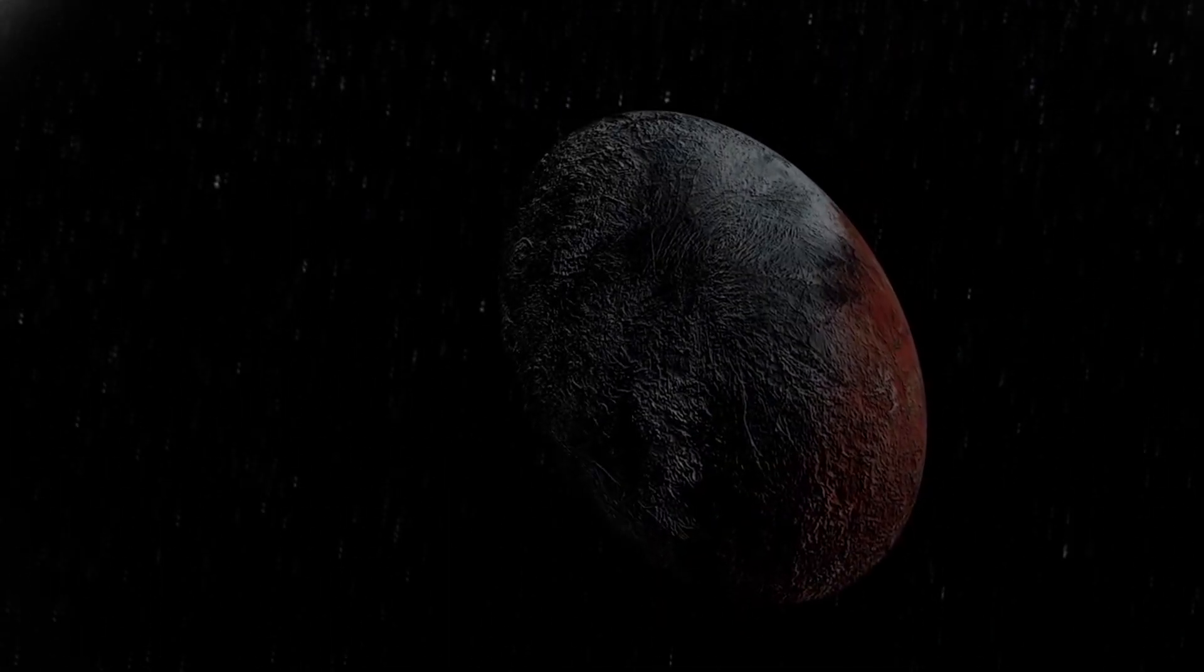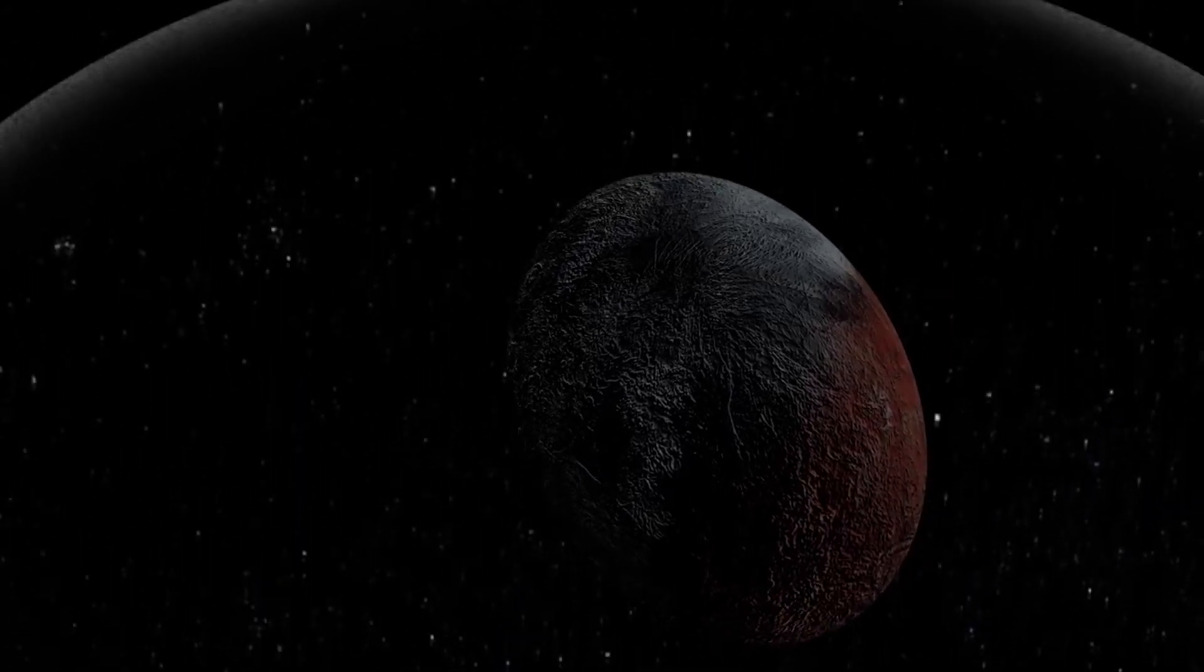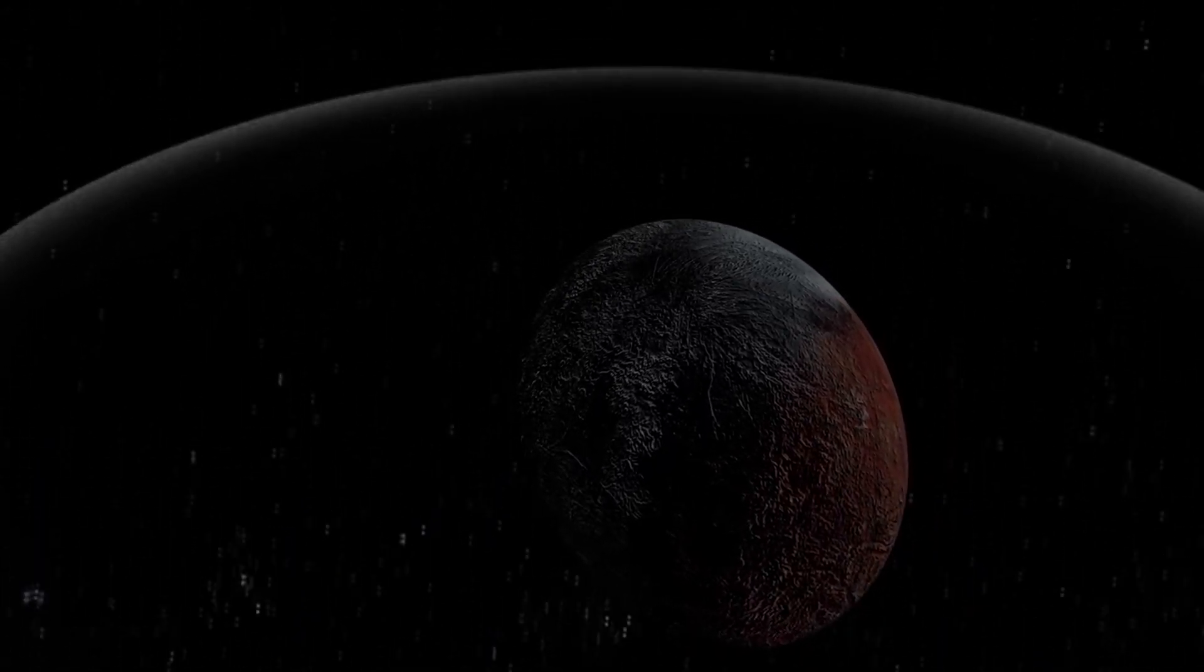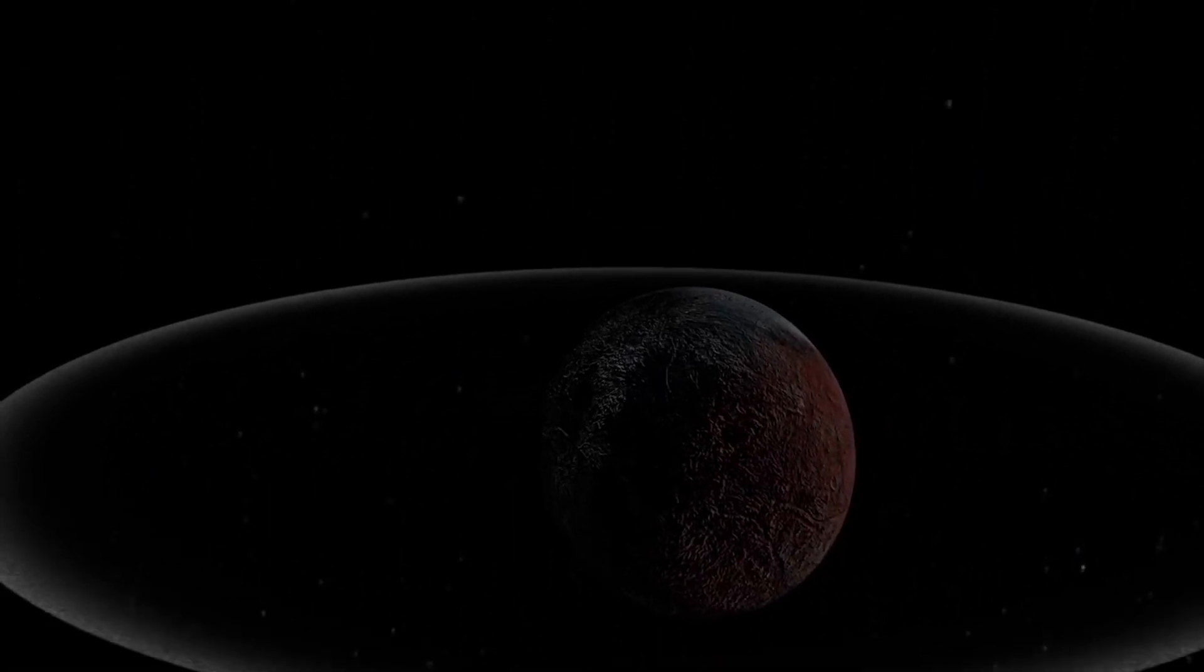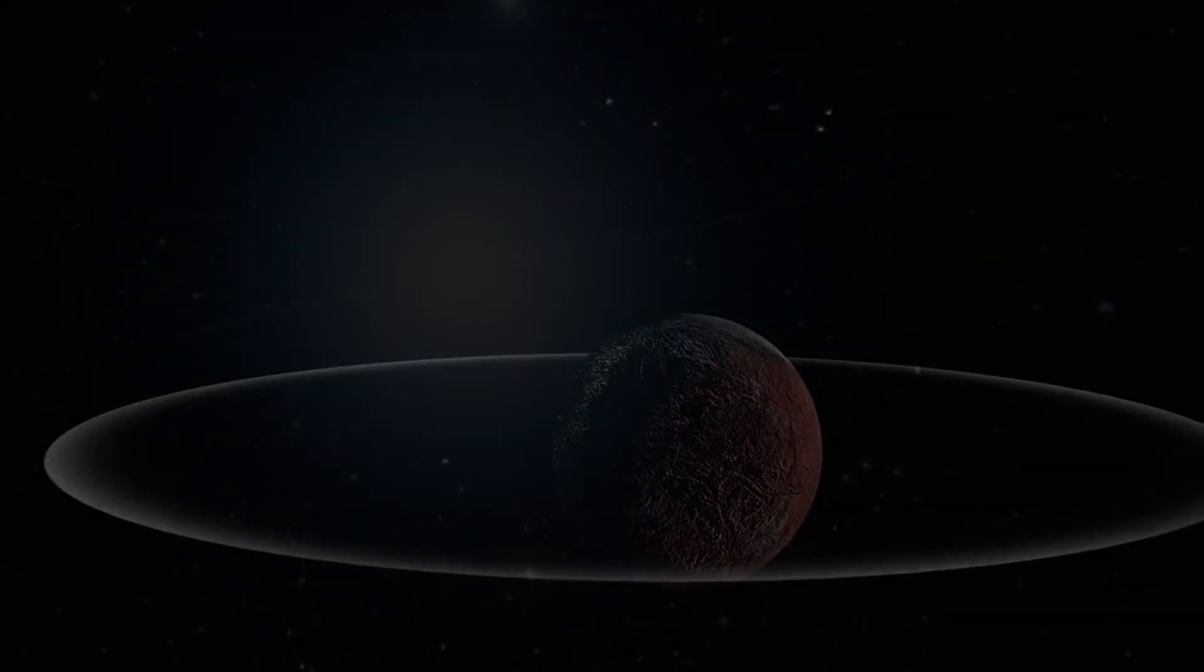The fact that Haumea is surrounded by a tiny ring only 40 miles wide is maybe the most perplexing feature about the planetoid. What exactly is it, and where did it come from? Nobody knows for sure.